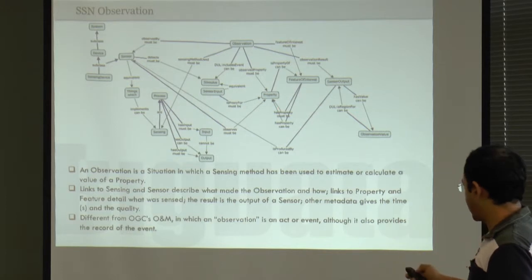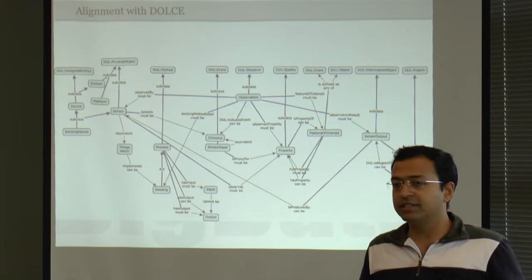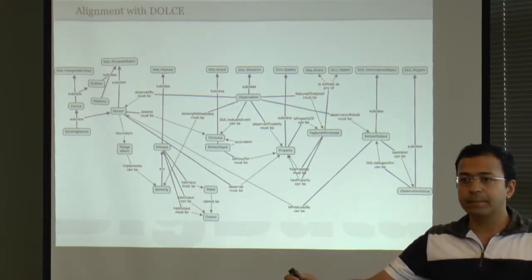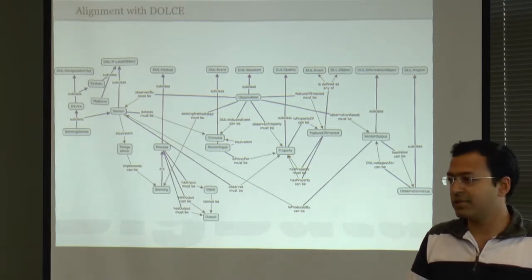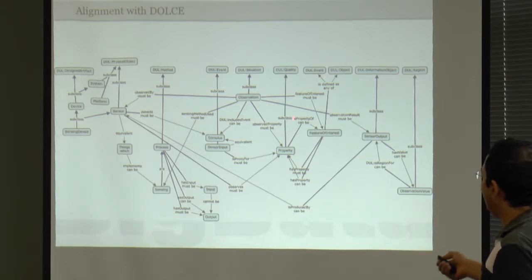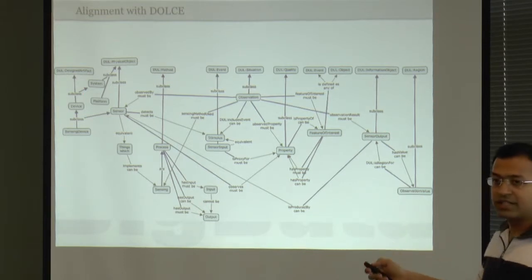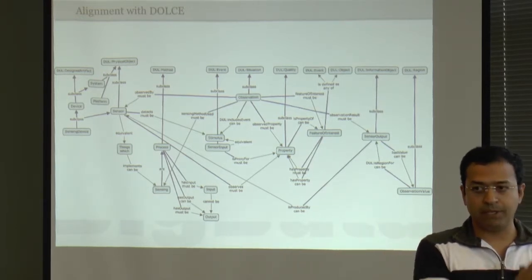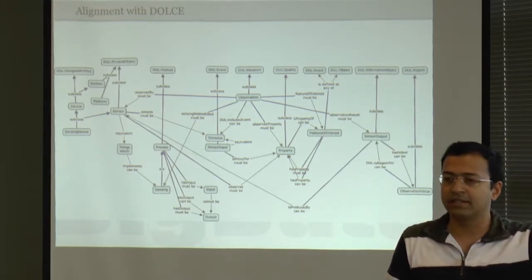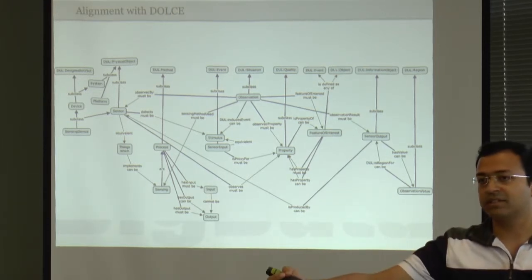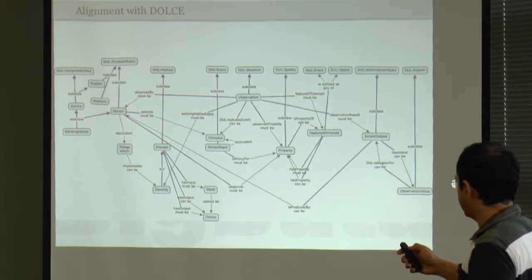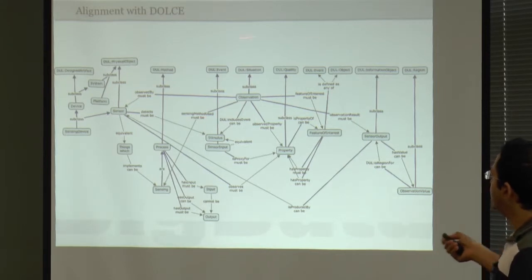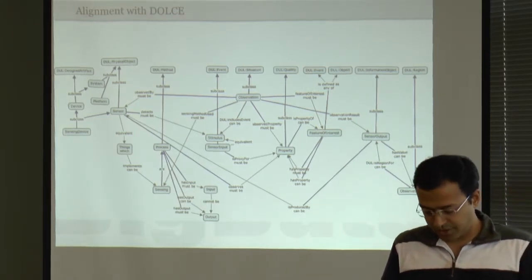There has been a discussion about ontologies — when you have various ontologies, how do you make alignment possible? One approach is to align what you develop into an upper-level ontology. An upper-level ontology is a generic description of certain concepts. If you align your ontology to an upper-level ontology that is well accepted by many other groups, you are indirectly aligning to those groups' ontologies. In SSN, the upper-level ontology is called the Dolce ontology.